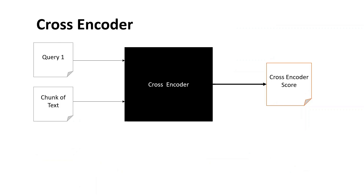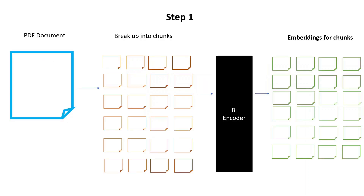Then comes the cross encoder. The cross encoder is different from the bi-encoder — it takes two texts, a query and a chunk of text, at the same time, and produces a cross encoder score.